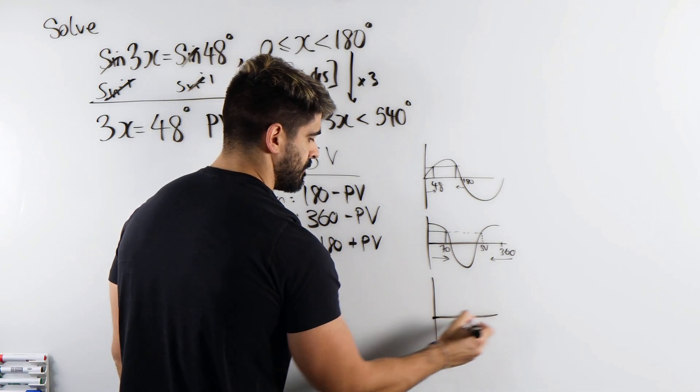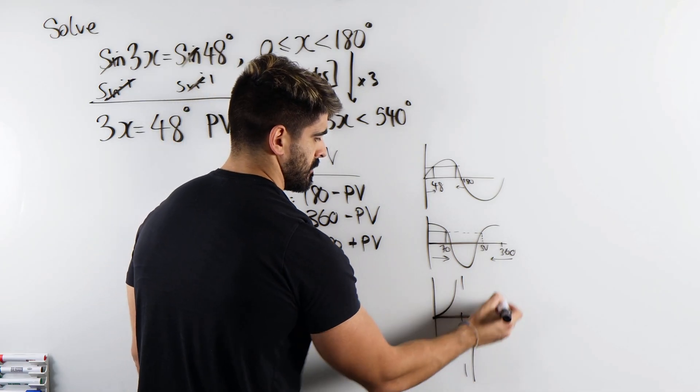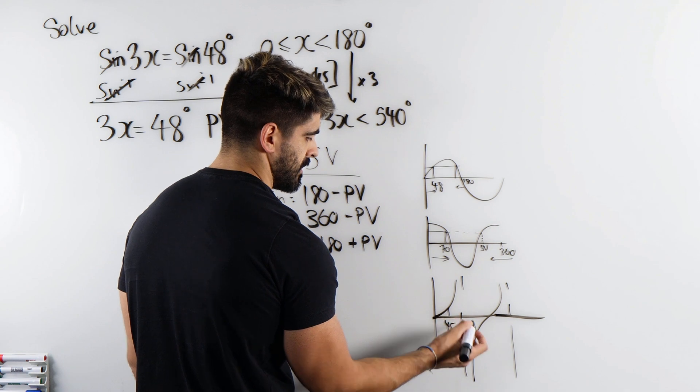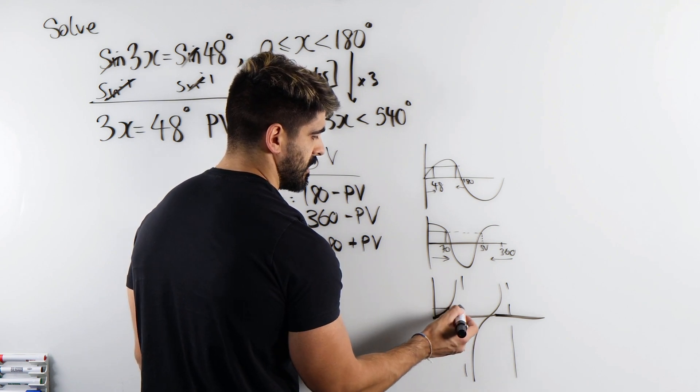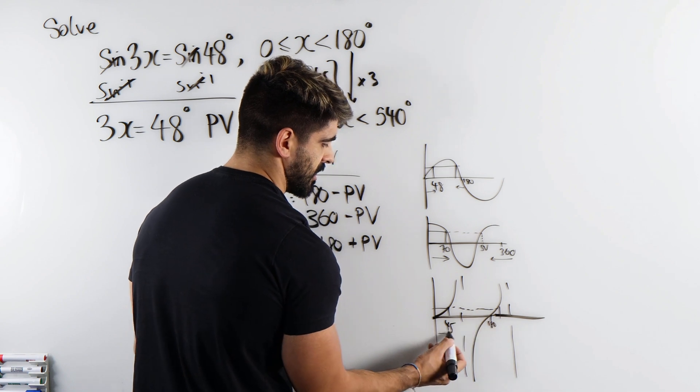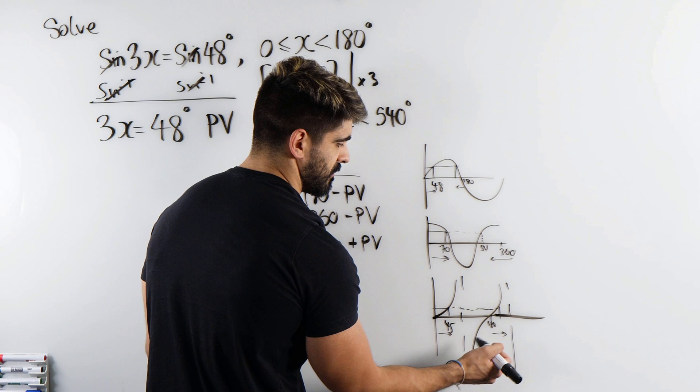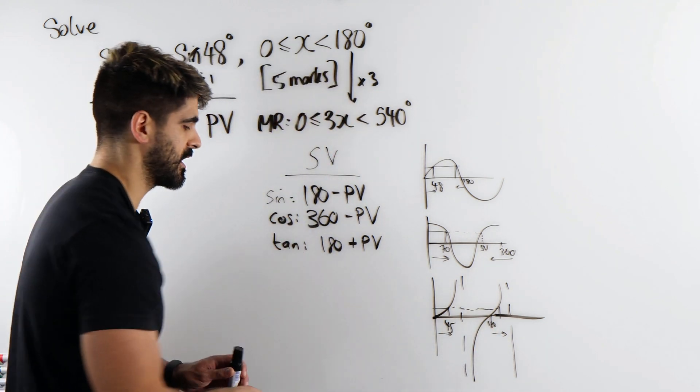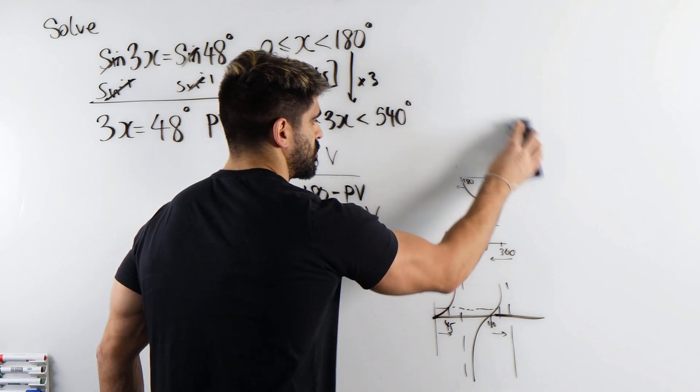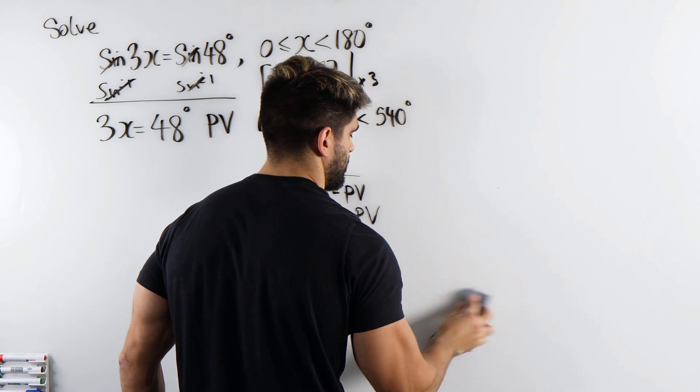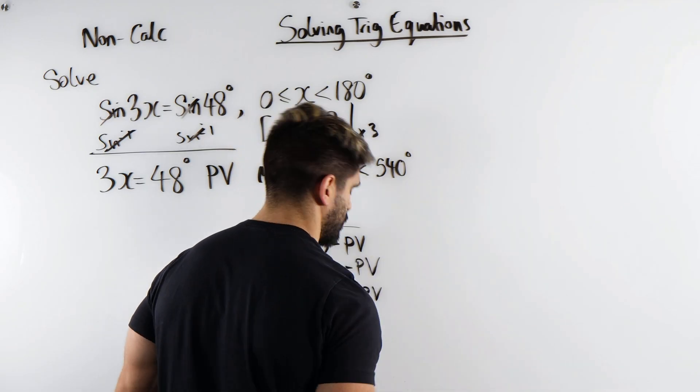For tan, say you got 45, which came from 1. The other solution's over here, this is 180, so you're going in by 45, 180 plus the primary value. But you don't need to keep drawing that graph. Just remember how to work out the secondary value every single time. And one thing's for sure, do not draw a cast diagram.